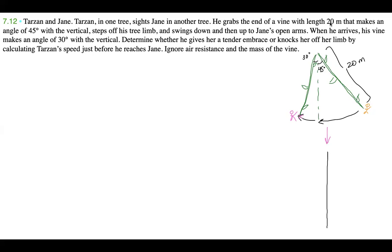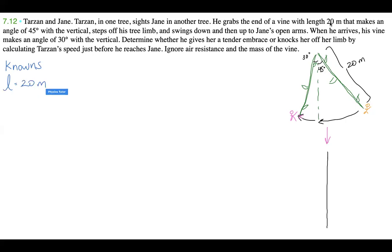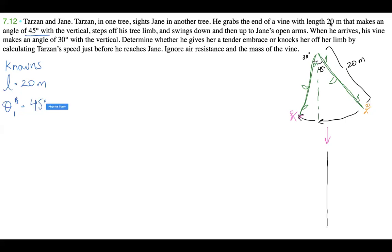Let's write down all of our knowns. The length of the vine is 20 meters. Theta one is 45 degrees, and theta two is 30 degrees.